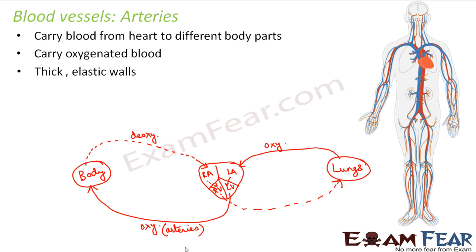Arteries have thick elastic walls. Why? Because blood flows from the heart, which is a pump, so the blood flows under very high pressure. If they have very thin walls, due to the very high pressure of the blood, the walls may rupture and the blood vessel can get damaged. That is why they have very thick walls, because the blood flowing through them is coming from the pump.